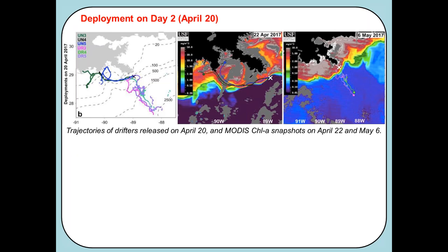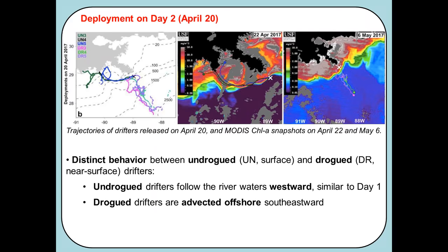Turning to the drifters deployed on April 20th, we see two distinct groups. Surface drifters were advected westward — dark blue, dark green, and black on the map — following the same pathway as the drifters deployed two days earlier. The near-surface drogued drifters, however, lingered around for a few days and were then advected offshore. On the chlorophyll images, the surface drifters followed the edge of the main riverfront while the drogued ones were advected offshore.